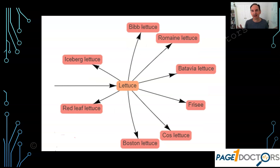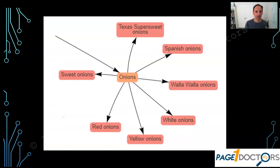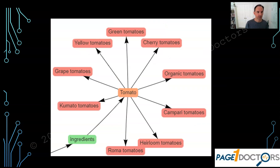Lettuce — you get the idea, right? There are different types of lettuce: bibb, romaine, batavia, frisee. And then onions — same thing — different types of onions: red, yellow, Texas, Spanish, Walla Walla. And how about tomatoes? There are different types of tomatoes — I've never heard of kumato before, but there you go. Of course, I'm simplifying this. You take this concept and apply it to your website or your niche.